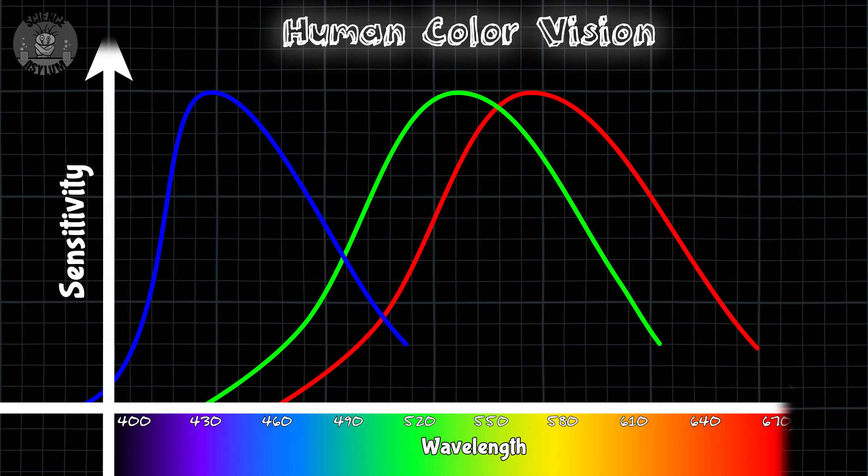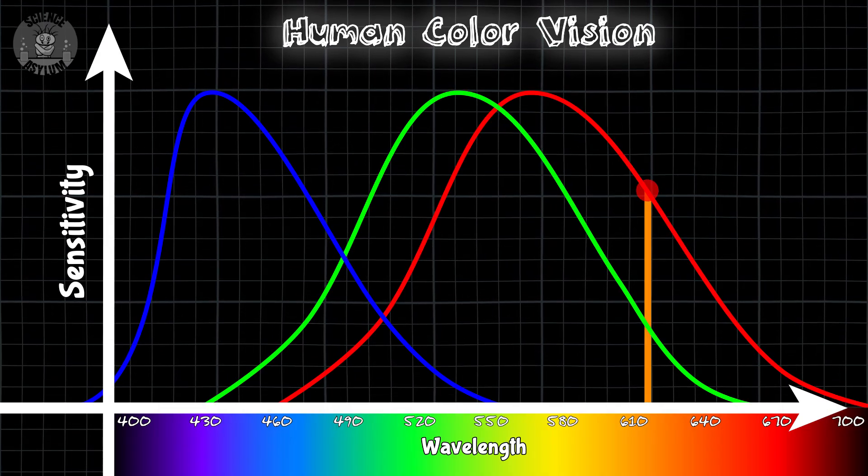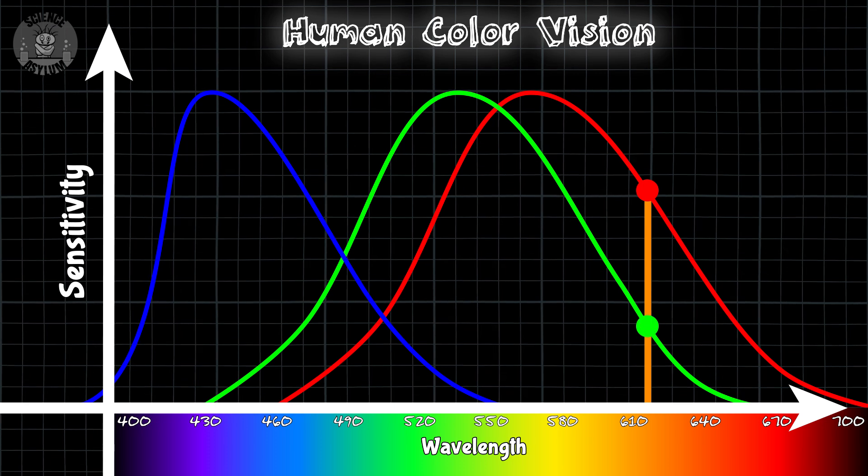If you map out the sensitivity of the cone cells against the visible spectrum, you get something like this. Now, let's say orange light enters your eye.